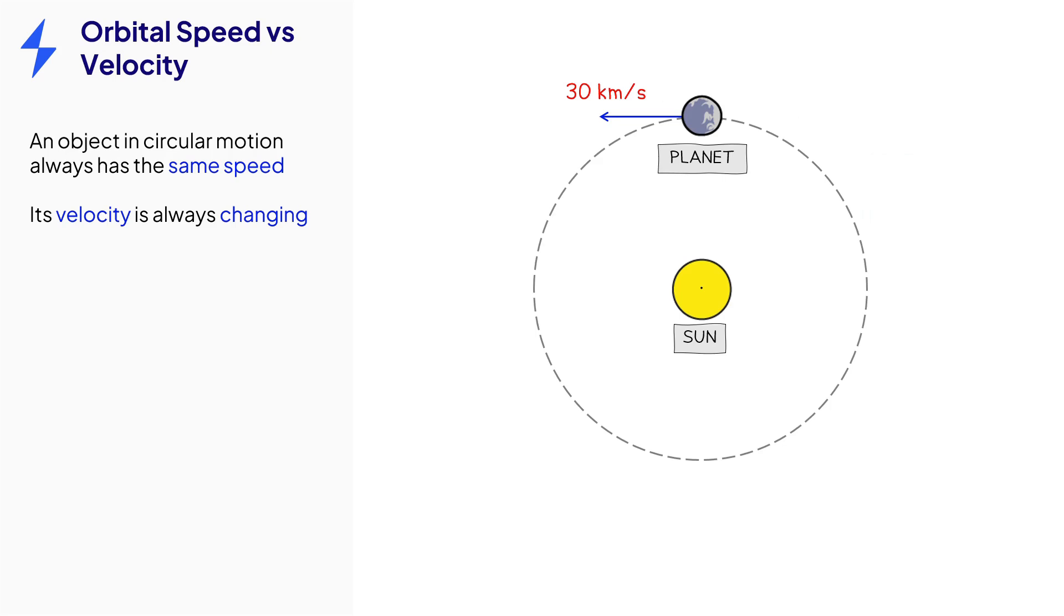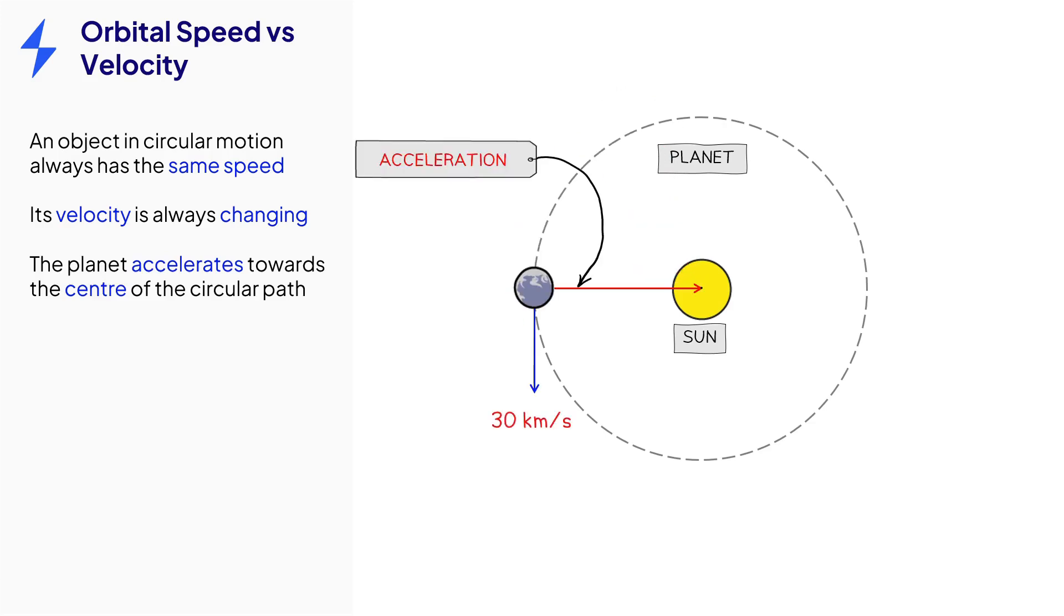A change in velocity is also called acceleration. The object is accelerating towards the centre of the circle. You may wonder why the planet is not just pulled straight into the sun, but the component of velocity at right angles to the radius prevents this.